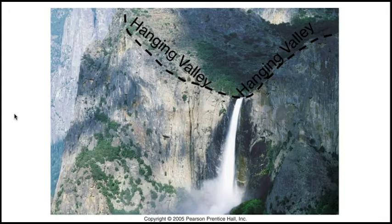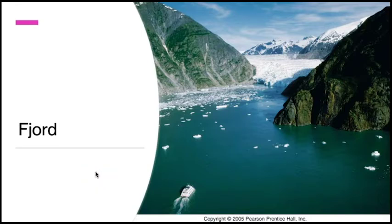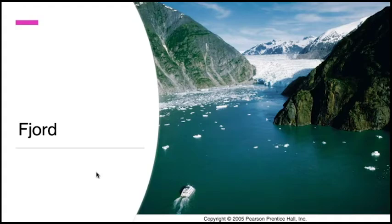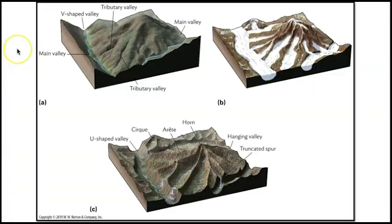Waterfalls, like Bridal Veil Falls in the photo, form when hanging valleys contain streams. Paternoster lakes are simply a series of lakes occupying the bottom of a U-shaped valley. Fjords are U-shaped valleys that have been flooded by rising sea levels — some alpine glaciers flow all the way to the sea, and as global temperatures rise and these glaciers melt and retreat, their meltwater enters the ocean, causing sea levels to rise and flood the U-shaped valleys. Domes form when alpine glaciers flow over especially resistant bedrock, eroding it into a dome shape. To summarize: before mountain glaciation the area has a normal stream-dominated topography, during glaciation glaciers advance through the valleys, and after glaciation the area's erosional features are left behind.